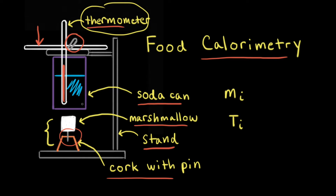Next, we light the marshmallow on fire. As the marshmallow burns, heat is given off, and that heat is transferred to the water in the soda can. Therefore, the water in the soda can will increase in temperature, which we can see on the thermometer. After the marshmallow burns for a little while, we can stop the burning process, and we want to look at the thermometer for the maximum temperature reached.